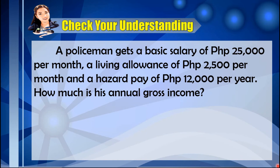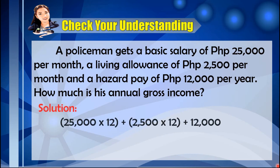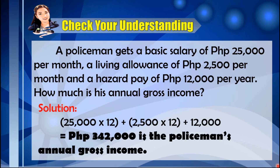At this point, let us check your understanding. You may pause the video to answer the given problem. Let's check our work. We have P25,000 times 12 for the basic salary for one year, plus P2,500 times 12 for the living allowance for one year, plus the hazard pay of P12,000 per year. This gives us P342,000 as the annual gross income of the policeman.